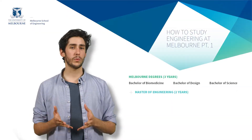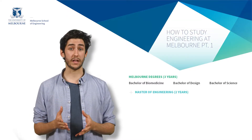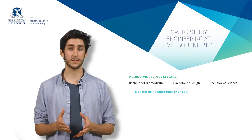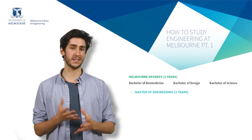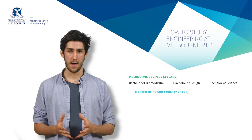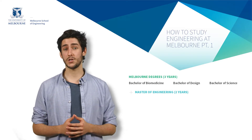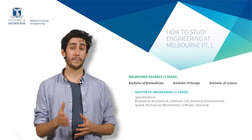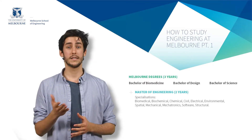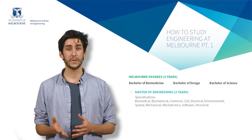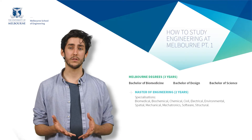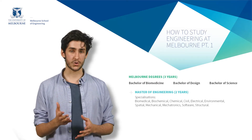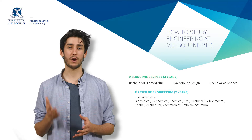Following this, the Master of Engineering then contains 11 different specialisations covering a range of engineering disciplines. The 11 engineering specialisations are Biomedical, Biochemical, Chemical, Civil, Electrical, Environmental, Spatial, Mechanical, Mechatronics, Software, and Structural.